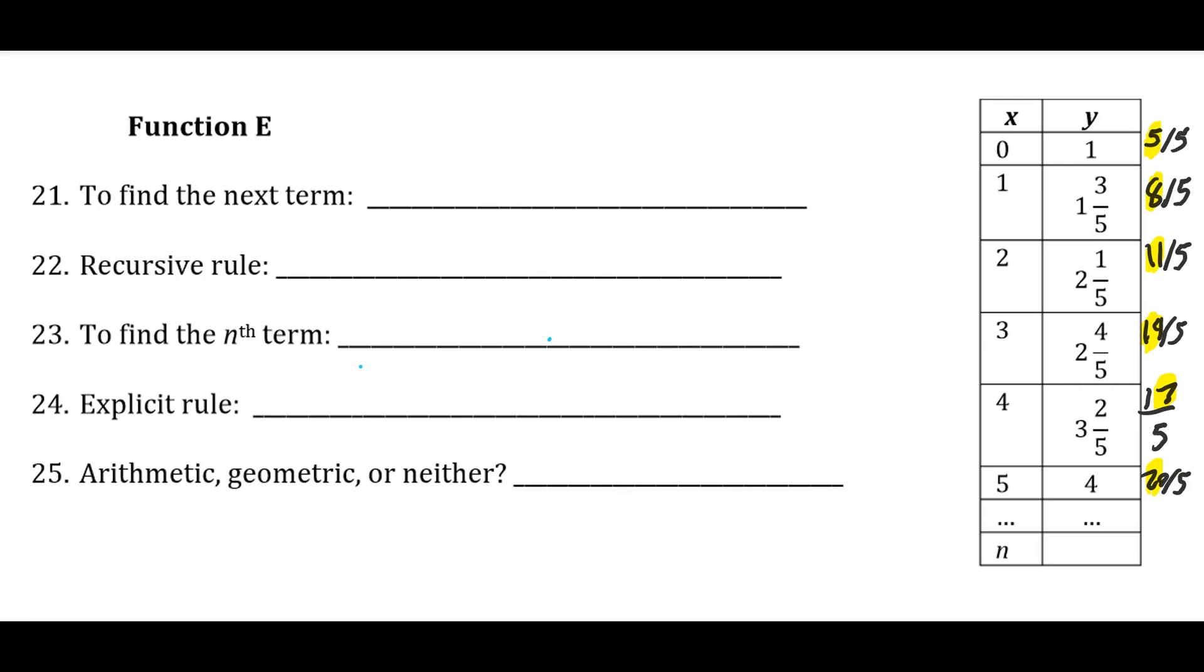But since there's a denominator to the fraction, instead of just saying adding 3, I need to say that we're adding 3 fifths. But this is still an arithmetic situation because we have a constant difference of 3 fifths. So we can write a recursive rule. I'm going to use more North Carolina style notation this time. So x sub n equals x sub n minus 1 plus 3 fifths. And that's starting from x sub 0 being 1.